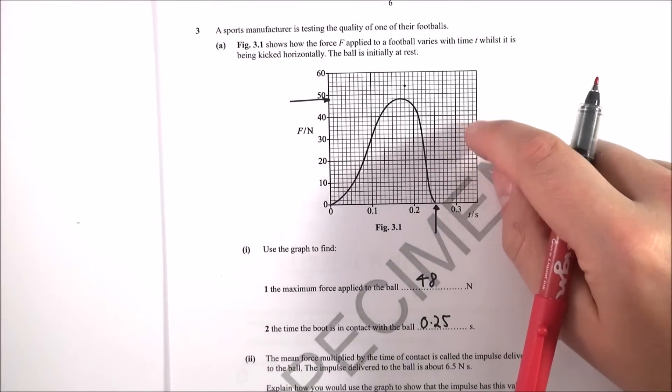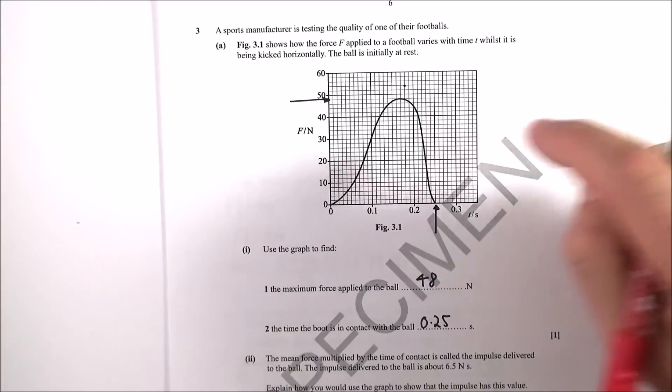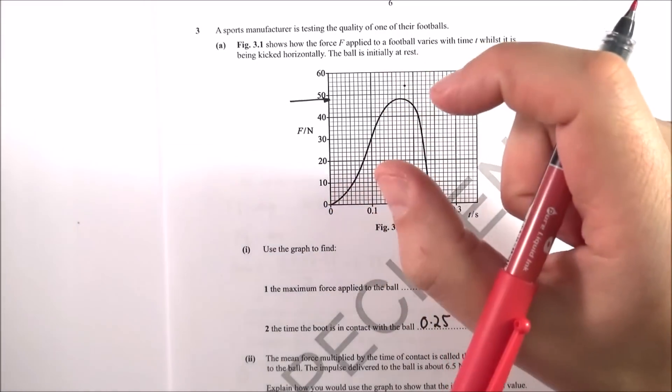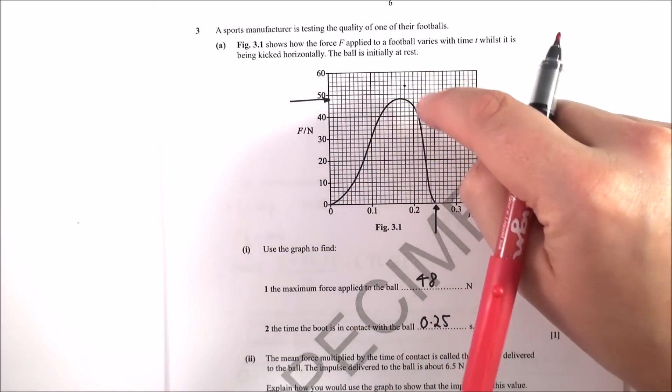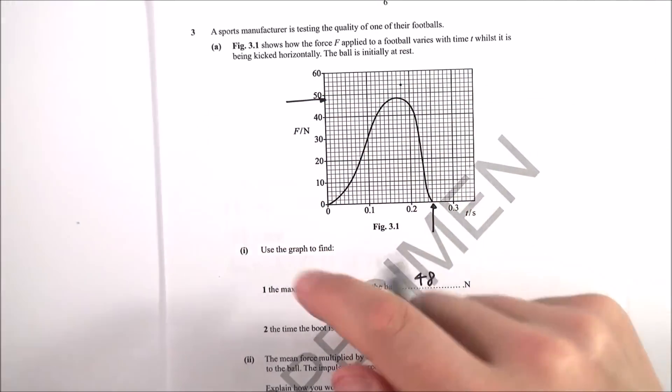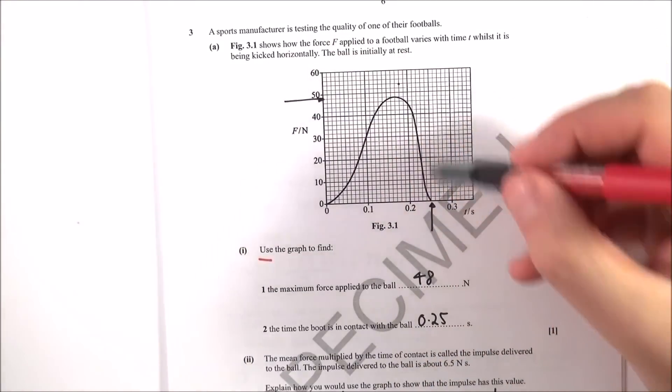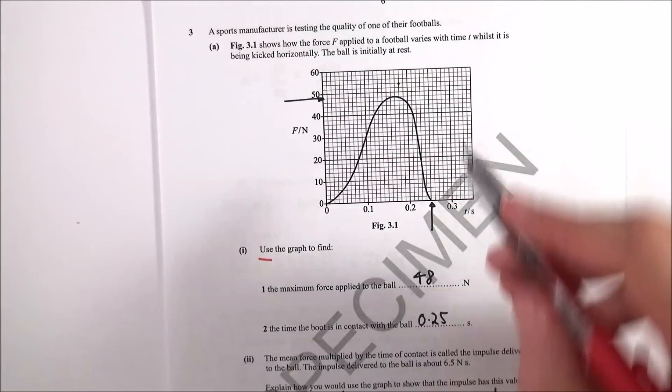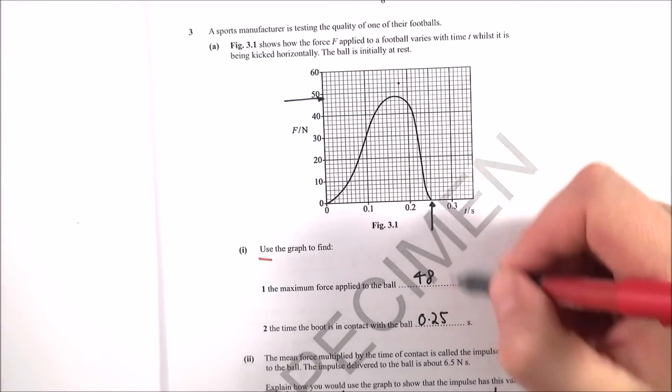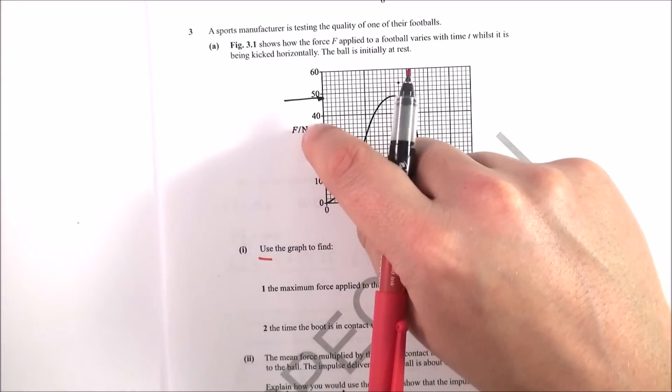Question three is all about impulse, Newton's second law, and you've got this F-T graph. This is what happens when balls are impacted - there's not a steady force. The force grows to a maximum and then decreases. Using the graph to find the maximum force applied to the ball, I read it off as 48 newtons, and the time the boot is in contact is 0.25 seconds. Easy marks for reading data off the graph, and they've been kind - they haven't used kilonewtons or milliseconds, just newtons and seconds.